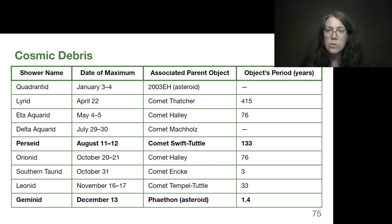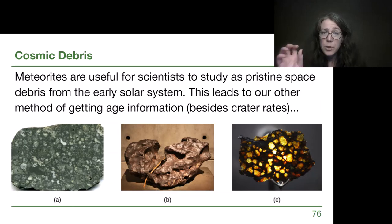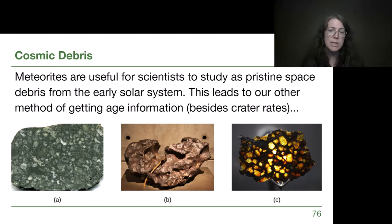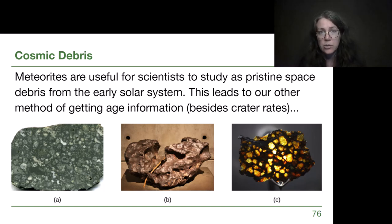It's worth planning ahead to see if you can catch a fun meteor shower. As for the meteorites themselves, they come in different types—mostly stony, mostly iron/metallic, or a mix—and they allow us to have a piece of pristine space debris with the same starting point as the rest of our solar system. By collecting these for direct measurement, we can get a much more accurate and reliable age for the formation of the solar system.